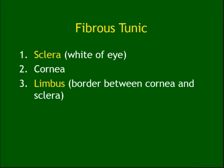The limbus is the border between the cornea and the sclera. You need to remember this — we have sclera, we have cornea, and in between it's called the limbus.